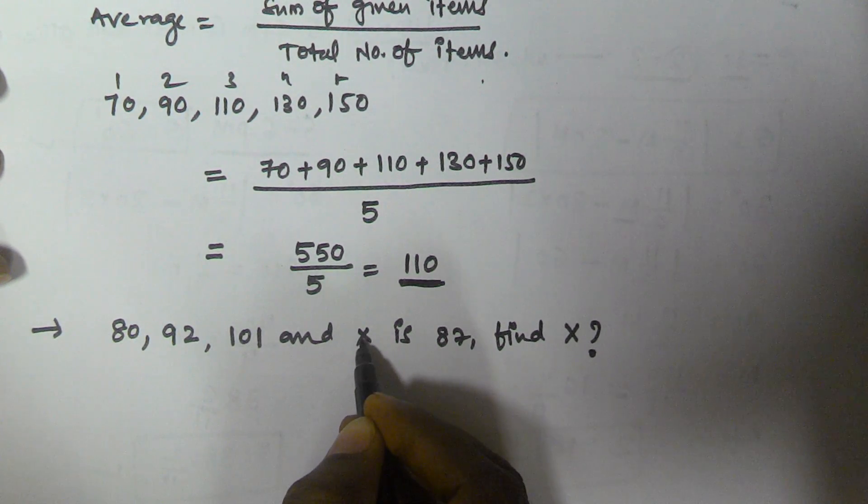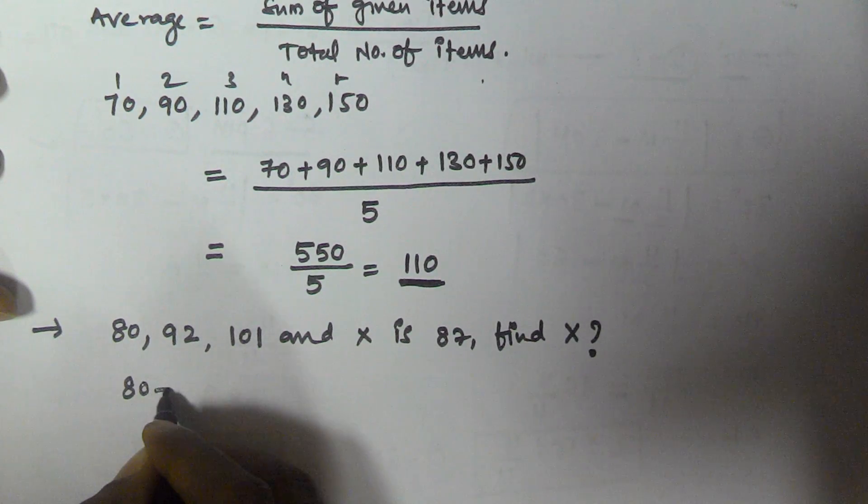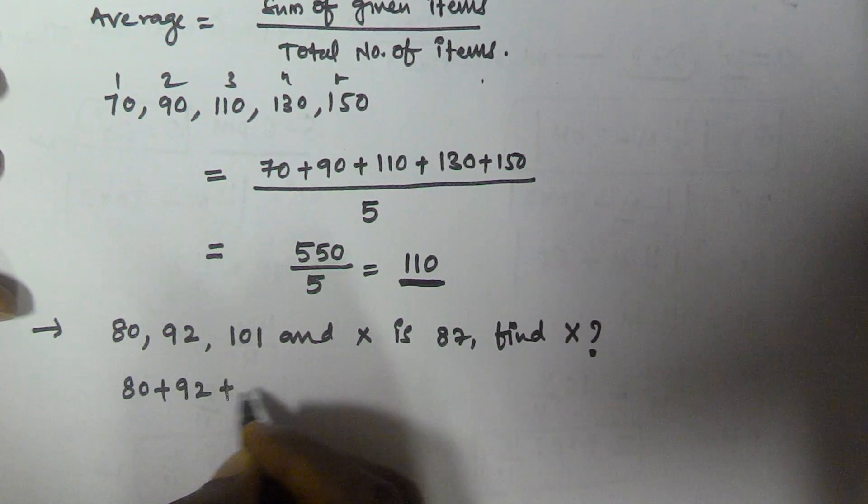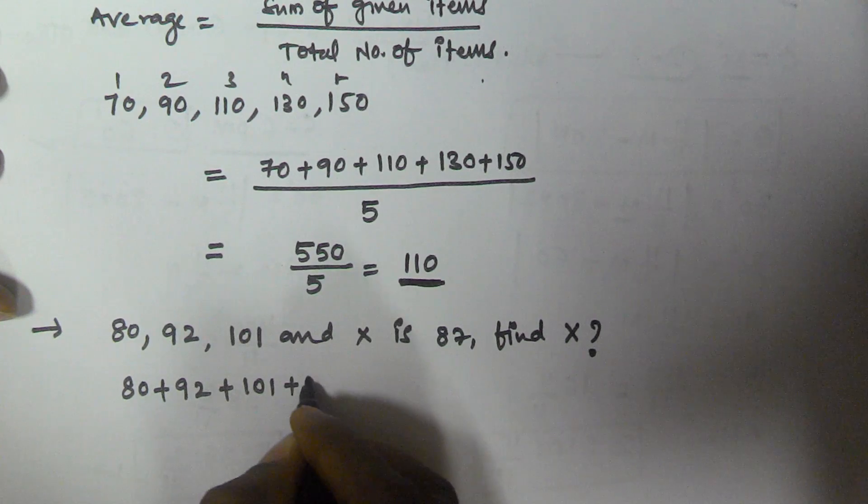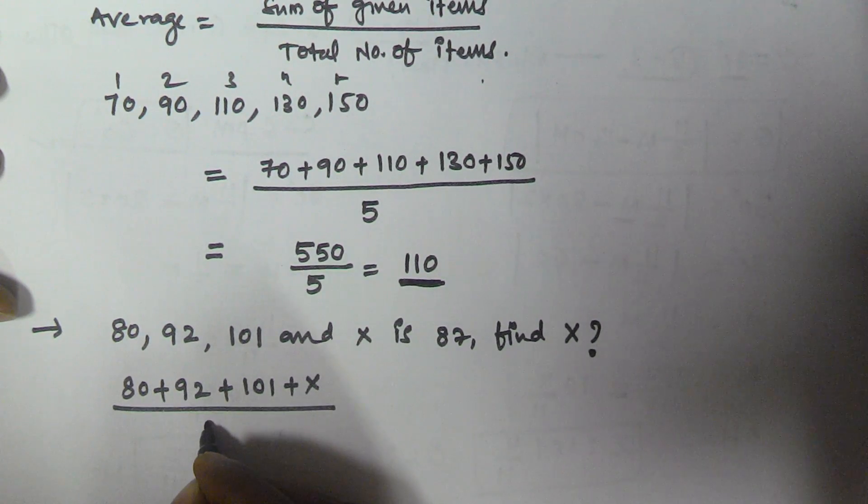So the sum of four items - 80 plus 92 plus 101 plus x - divided by the total number of items, that is 4.